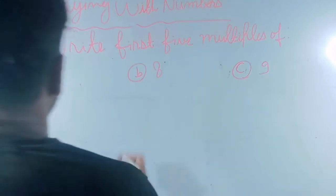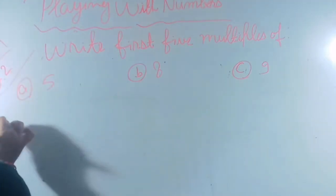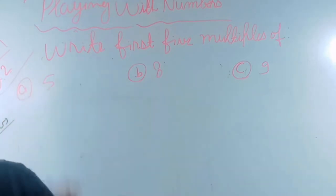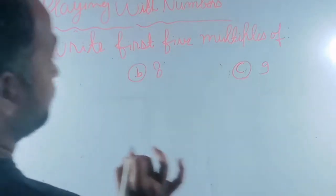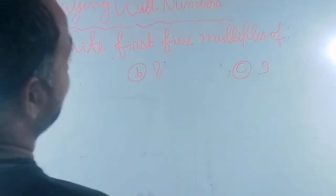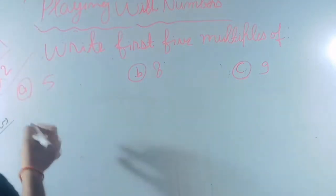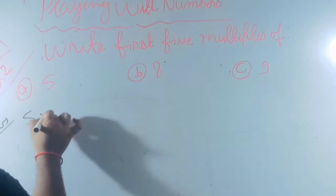One by one we will solve all questions, very easy. Look at the board. If we know the table of 5, we can write it. Method: 5 multiply 1 equals 5.